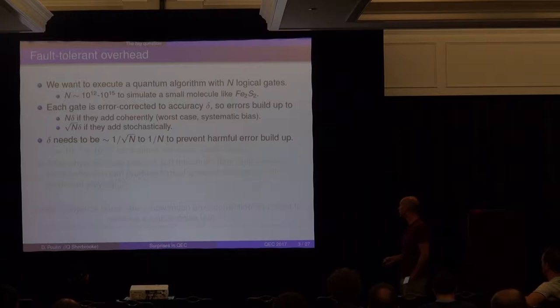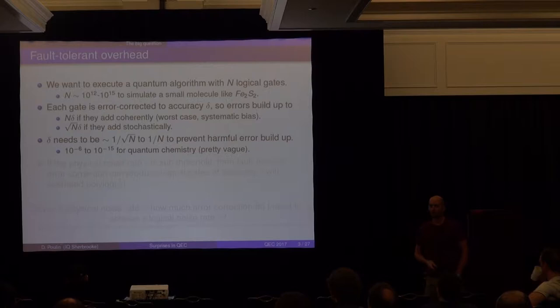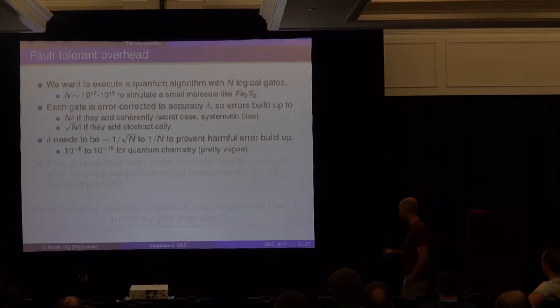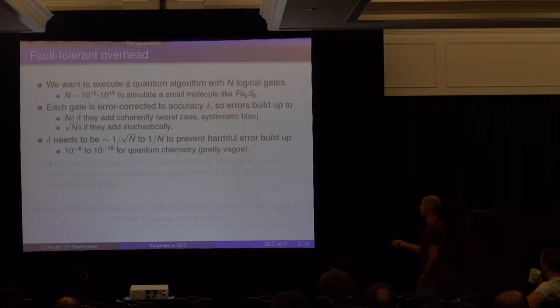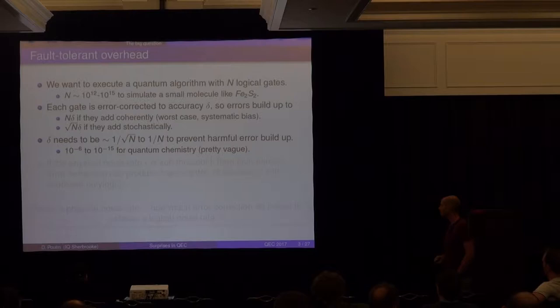We need logical accuracy somewhere between 1 over square root of n and 1 over n. Combining these numbers, we need a logical failure rate somewhere between 10^-6 and 10^-15. For this talk, I'll use 10^-10 as a good target to shoot for, though this needs to be studied in more detail.